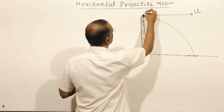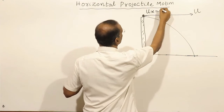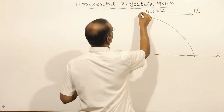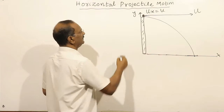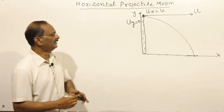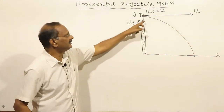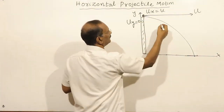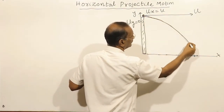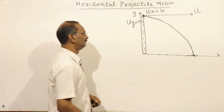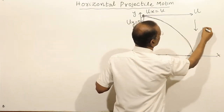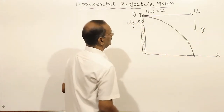The initial velocity in the x-direction is equal to u. The initial velocity in the y-direction is equal to 0. If you throw the projectile, it follows a parabolic path and eventually strikes the ground. At every point in the path, gravitational acceleration g acts downwards.